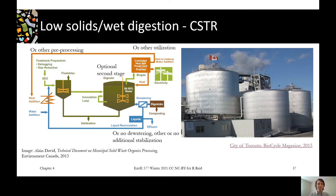We'll run through the three different classifications based on the solids. First is wet digestion, where solids are less than 20%. In the flowchart on the left, you can see some of the preprocessing we talked about. This one shows the pulper moving into a digester.